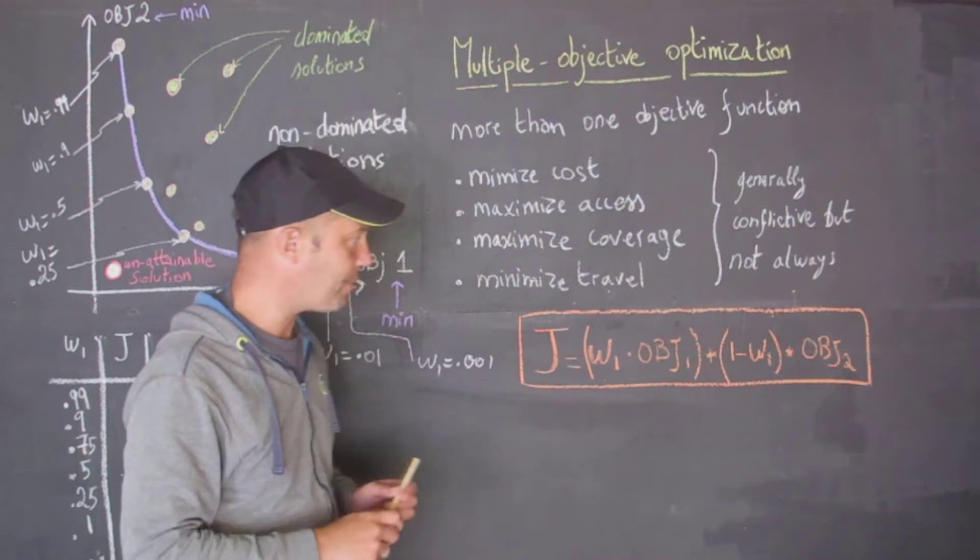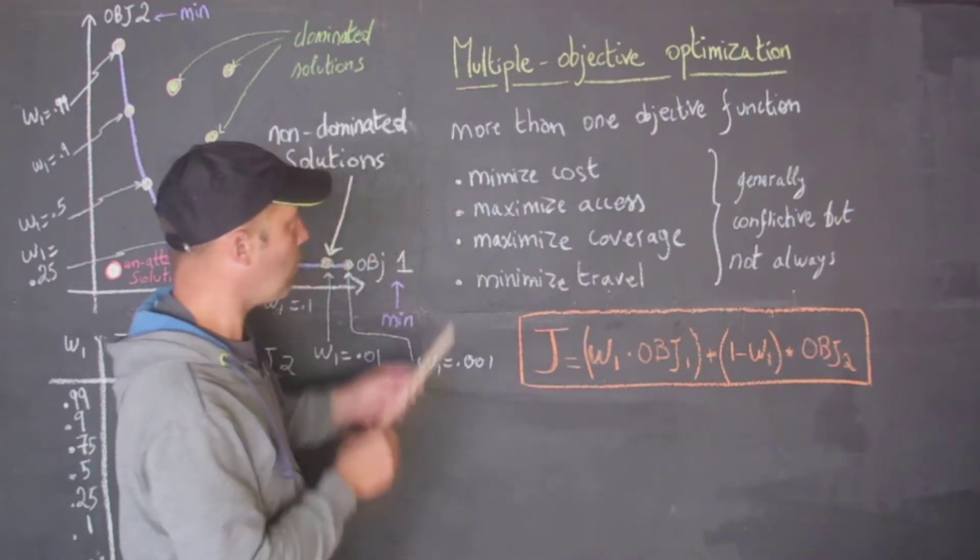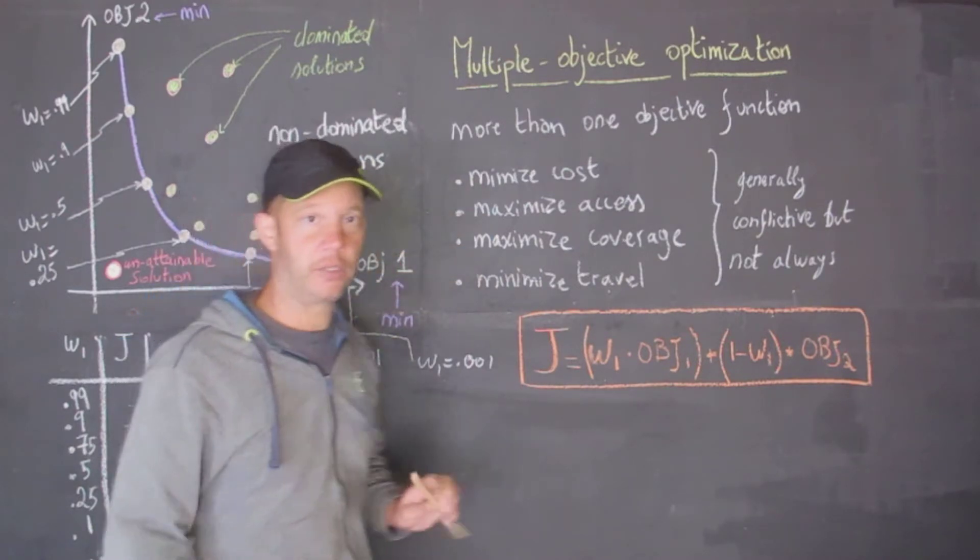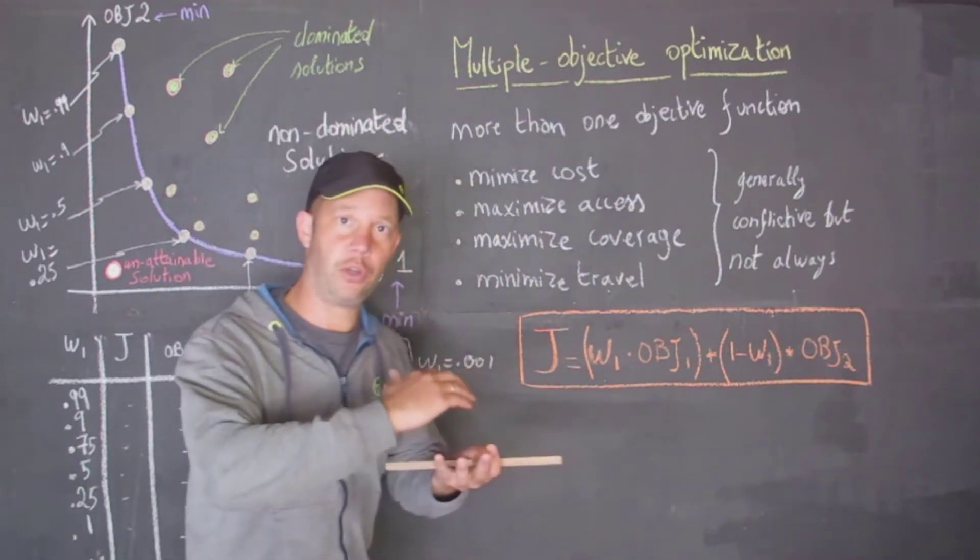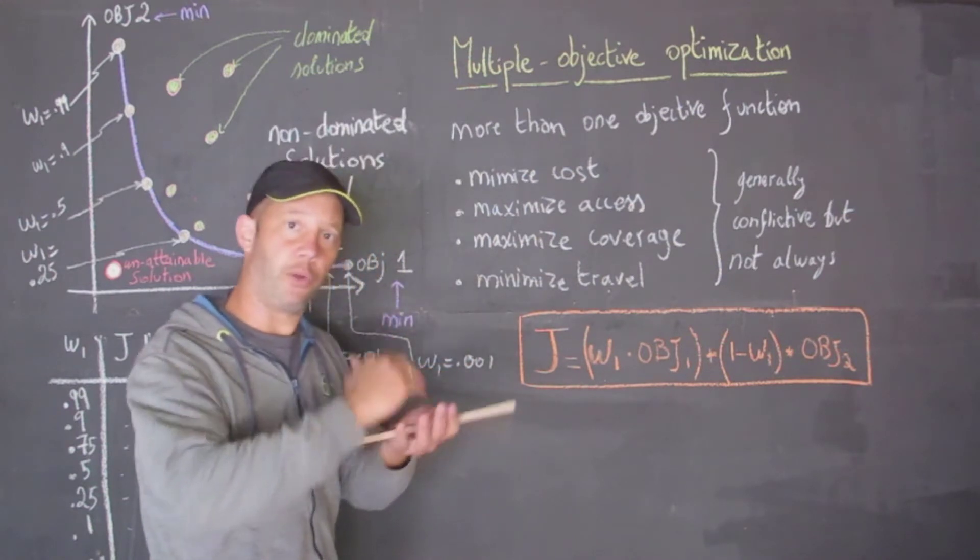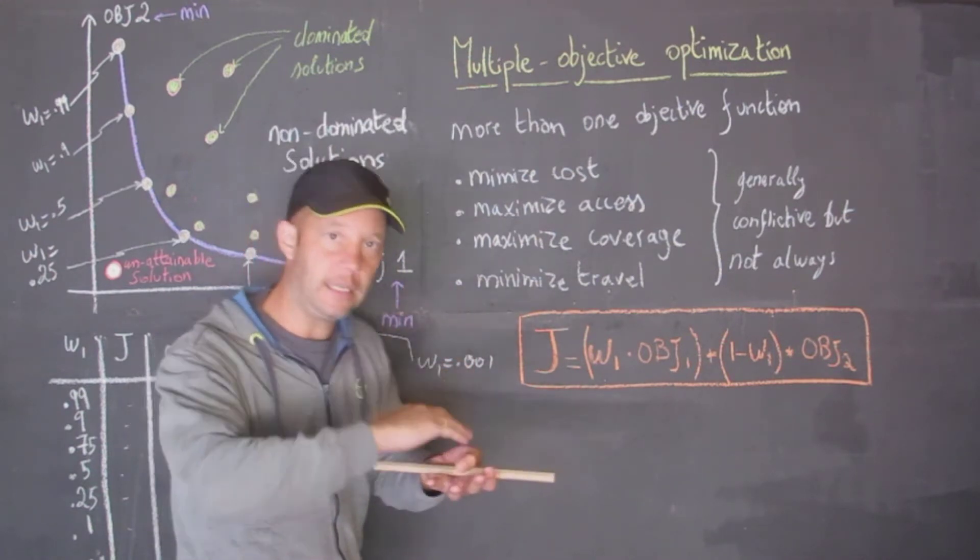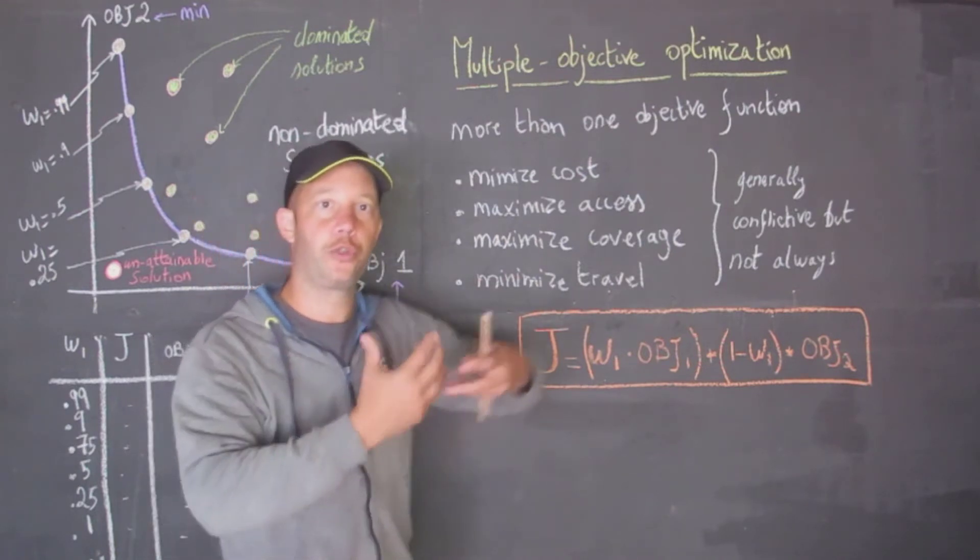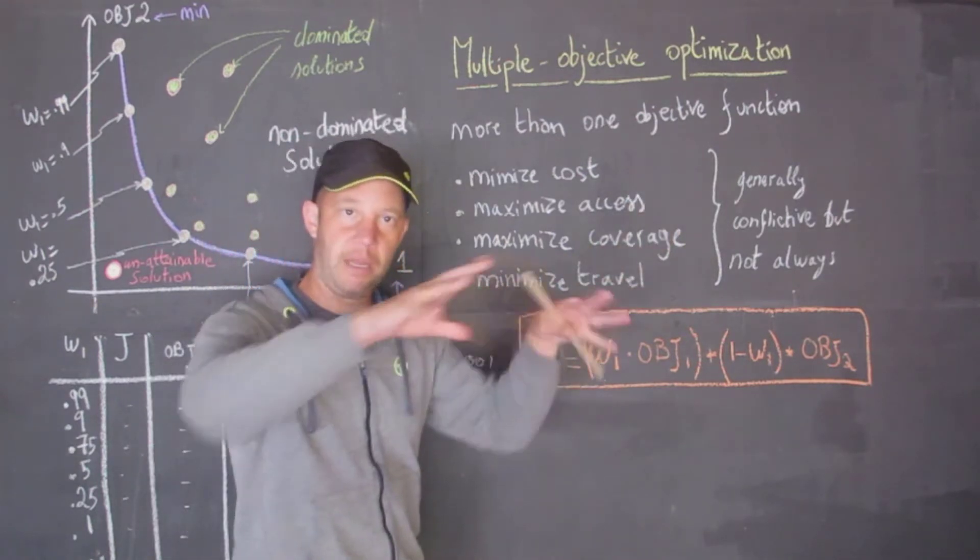Of course we would like to minimize the cost and minimize travel. So in an example of a school, we may want to keep the number of schools very low, but we also want the students to travel as little as possible. What happens? If you only have one school, students have to travel long. If you have many schools, students have to travel lower.